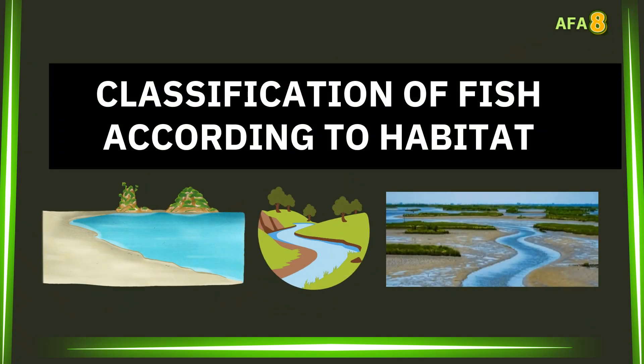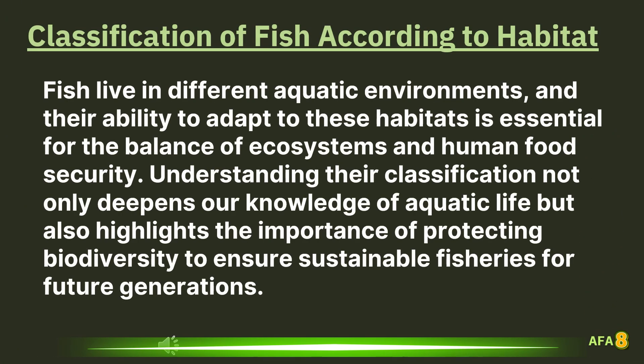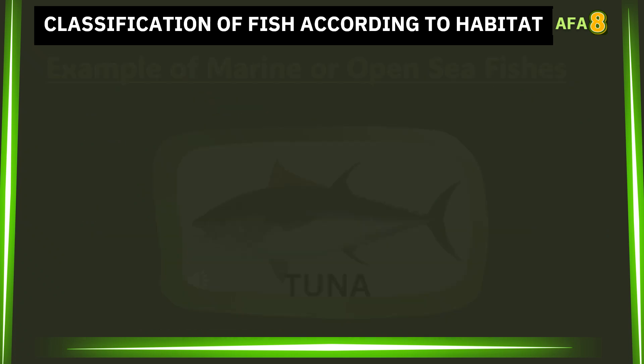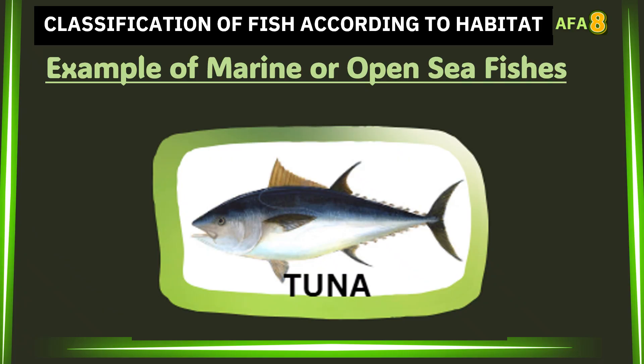The following are the classifications of fish according to their habitat. Fish live in different aquatic environments, and their ability to adapt to these habitats is essential for the balance of ecosystems and human food security. Understanding their classification deepens our knowledge of aquatic life and highlights the importance of protecting biodiversity to ensure sustainable fisheries for future generations. Marine or open sea fishes are species that live in oceans and seas where the water has high salinity. They play a vital role in marine ecosystems and global food supply, and protecting them helps maintain healthy coral reefs and ocean balance.